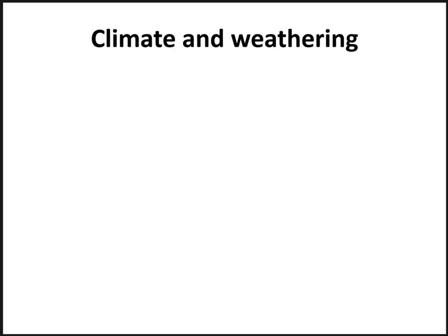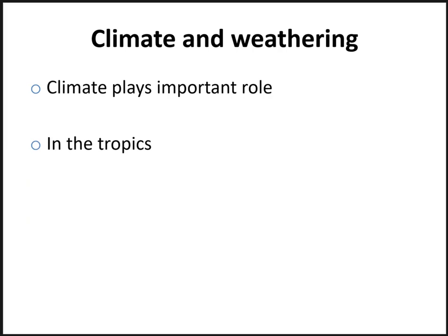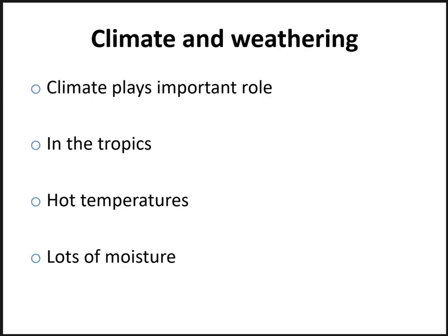Chemical weathering generally occurs more prominently in certain areas. Climate has a major impact on the type of chemical weathering you're dealing with. The majority of chemical weathering takes place in the tropics simply because of the hot temperatures and abundant moisture, which promote chemical weathering.